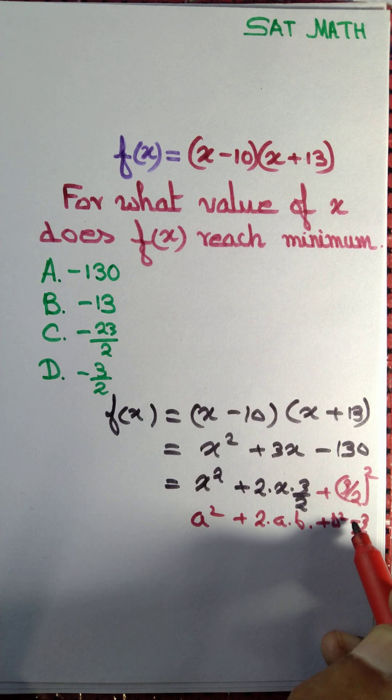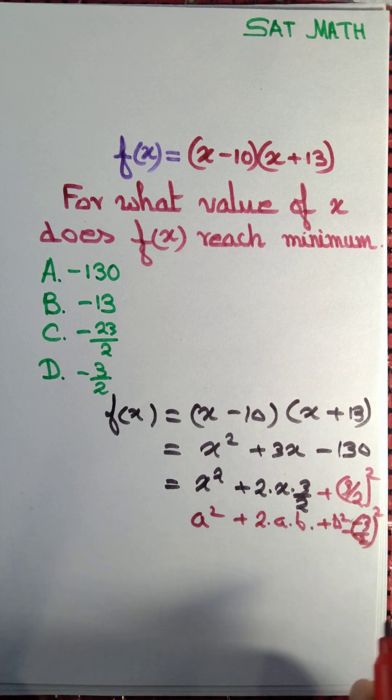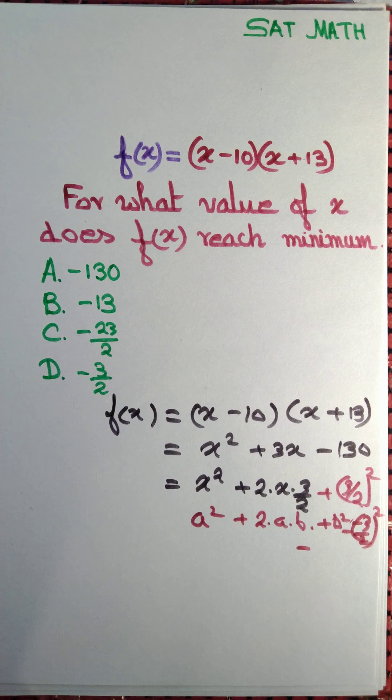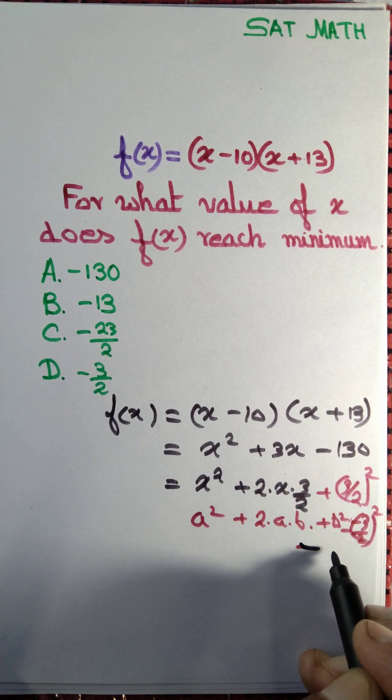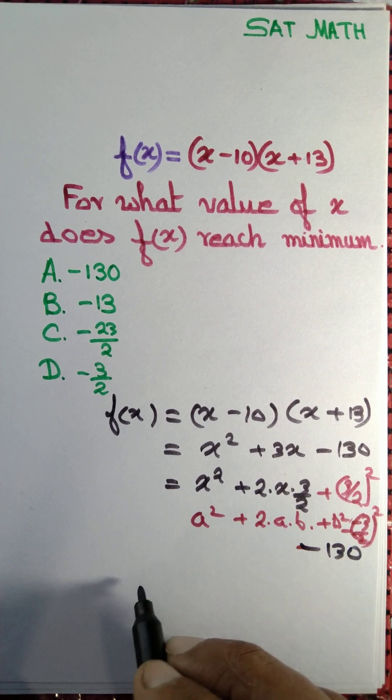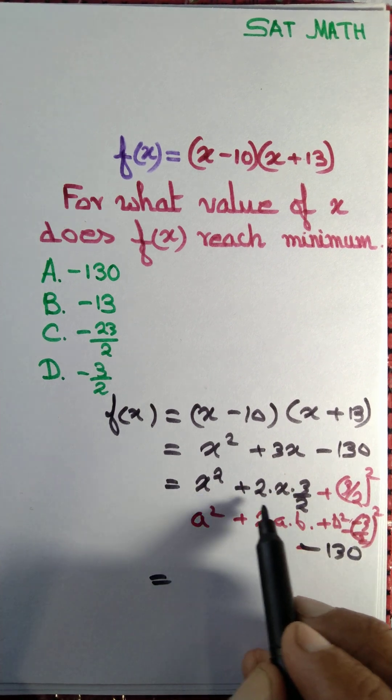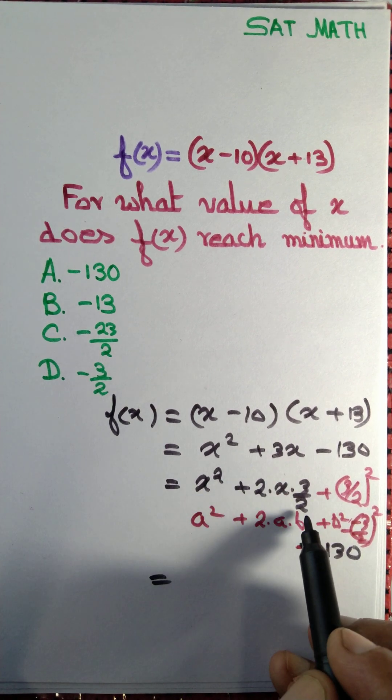And then minus 130, I can write it as it is, minus 130. So this expression x² + 2 times x times 3/2 plus (3/2)² is a perfect square.